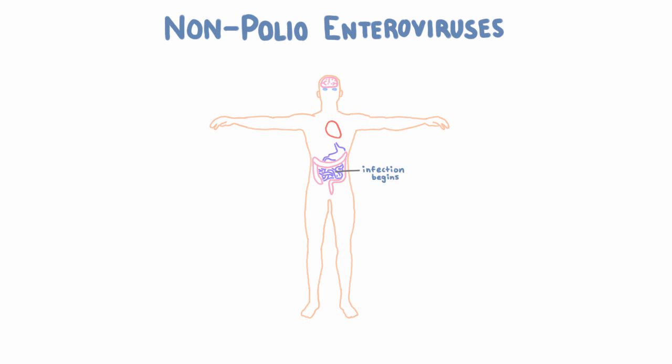So where can it go? First of all, the skin, where it can cause hand, foot, and mouth disease. This is usually caused by coxsackieviruses A, and the symptoms are easy to remember based on the name — it gives you a rash on your hands, feet, and your mouth. The rash usually consists of small, tender lesions, either vesicular or maculopapular. By itself, this is no big deal. You can also get other rashes from various enteroviruses.